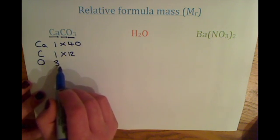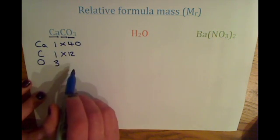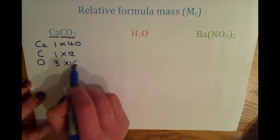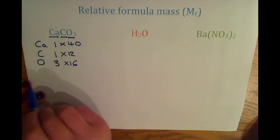And oxygen, we said the relative atomic mass was 16. So three atoms of oxygen times by 16 will give us the mass of oxygen in here.